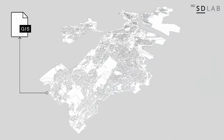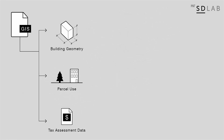The analysis begins with the GIS database maintained by the City of Boston. GIS stands for Geographic Information Systems, a common data format that combines spatial information with a diverse range of statistical data. Boston's GIS database enables users to connect multiple data types together, such as building geometry, parcel use, and property tax assessment information.